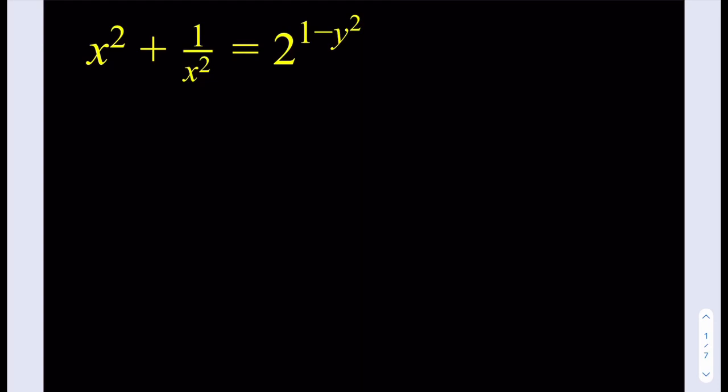Okay, so let's get started. We have x squared plus 1 over x squared is equal to 2 to the power 1 minus y squared. So if we only had one variable, then we could hopefully proceed like normal. But now we have two variables. And it's not a system of equations, right? We only have one equation, but two variables. So how do we go about that?